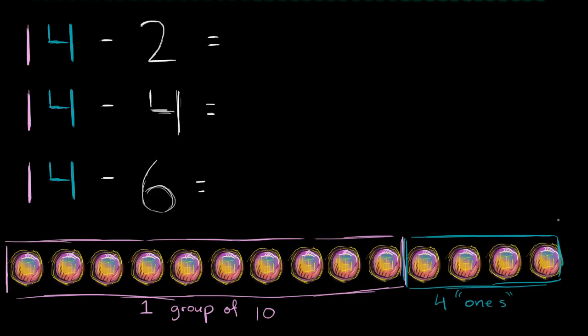Now let's look at each of these. What is 14 minus 2 going to be? Well, we could take away 2. So take away 1, take away 2. And how many are we left with? Well, we still have our 1 group of 10. So it's going to be 1 followed by how many ones do we have left over? We have 2 ones left over. 1, 2. So we are going to be left with 12.